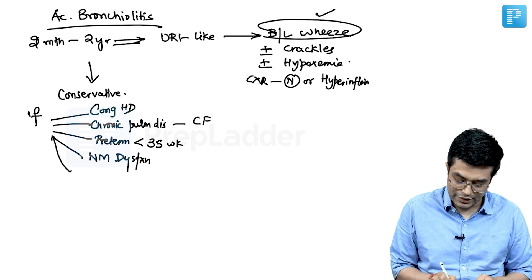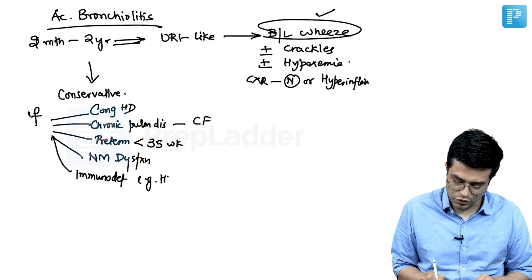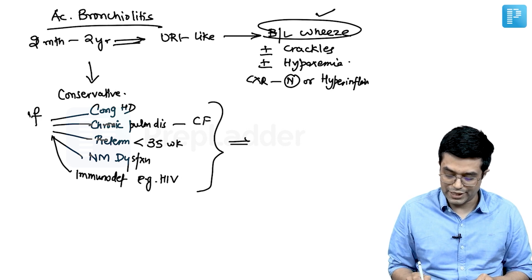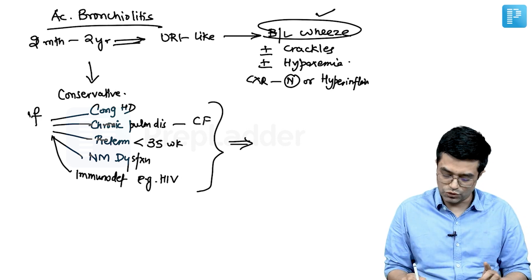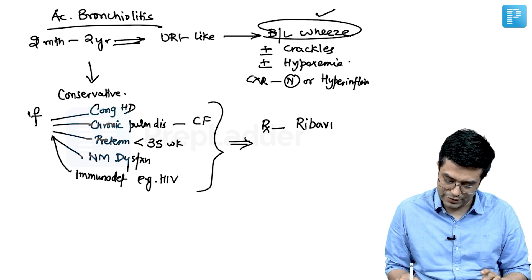And finally, if the child is having any immunosuppression or immunodeficiency, for example HIV or prolonged steroid therapy, these are the patients in which life-threatening illness can develop, and so for the purpose of treatment you will be using ribavirin in the patient.